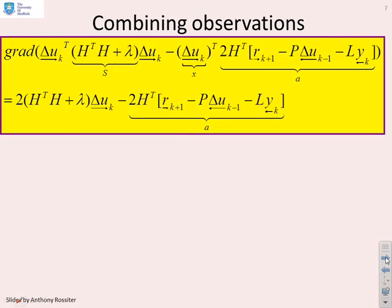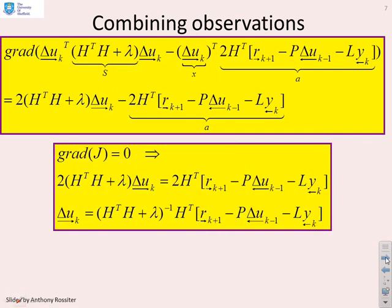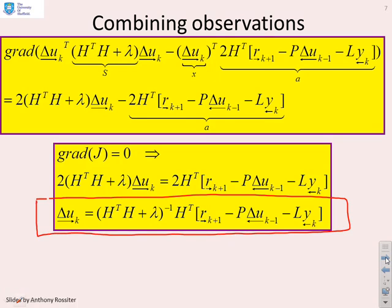If we combine all that together, what you'll find, using the same observations in the earlier videos, is that the DMC control law reduces to this box here, that the future input trajectory is given by some matrix H transpose H plus lambda I inverse times H transpose, all times this vector here, R future minus P delta U past minus L Y past.